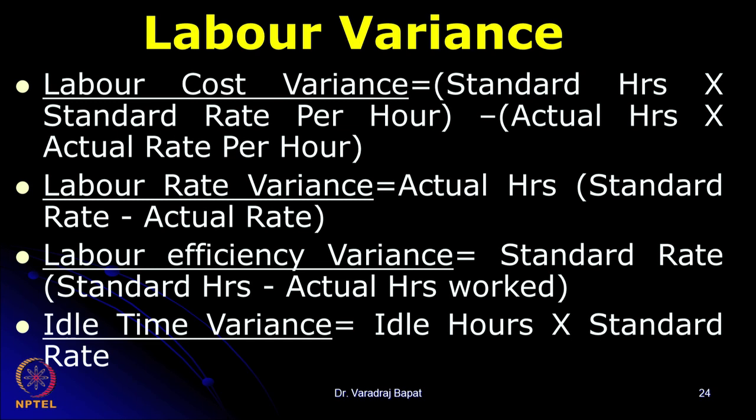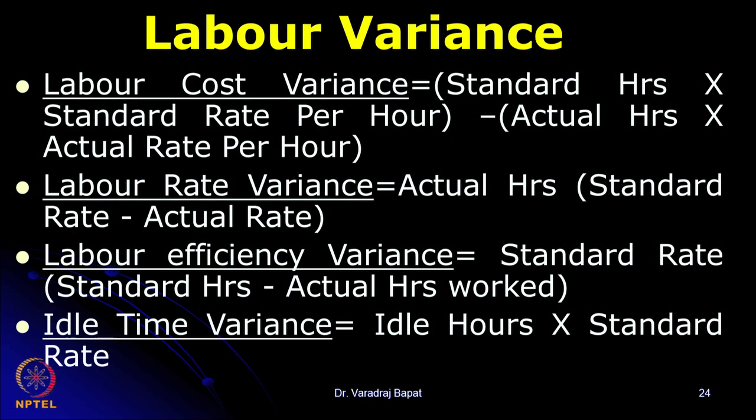There can be a third variance known as idle time variance. Idle time is time wasted because of reasons like lack of instruction or lack of power. Idle time variance is idle hours into standard rate — it is always adverse because idle time is always a negative variance. So labor cost variance can be divided into rate, efficiency, and idle time. Similar formulas are applied for labor as for material.